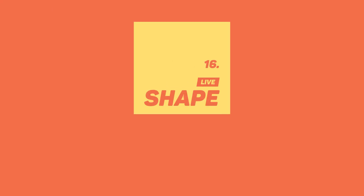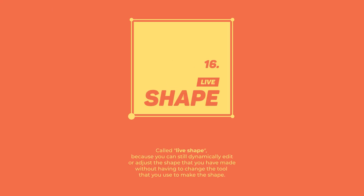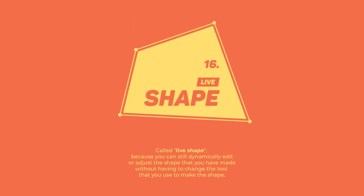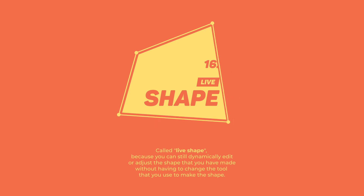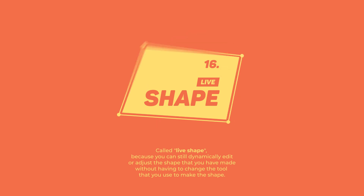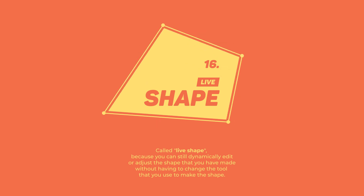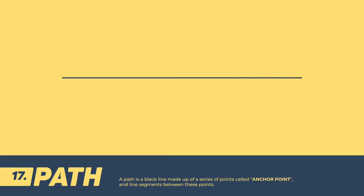Live Shape — called Live Shape because you can still dynamically edit or adjust the shape that you have made, without having to change the tool you used to make the shape. Path — a path is a line made up of a series of points called Anchor Points, and line segments between these points.